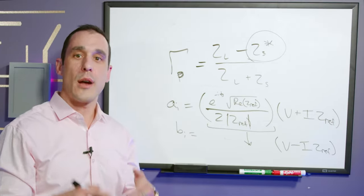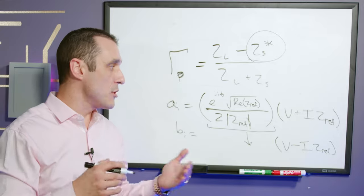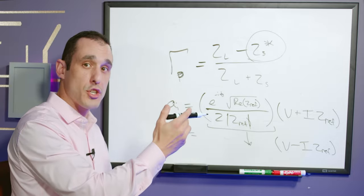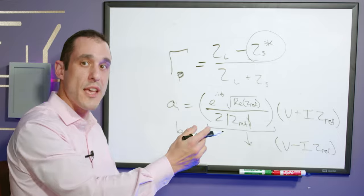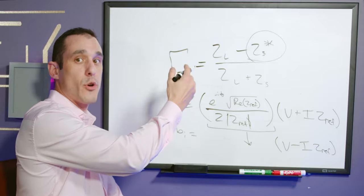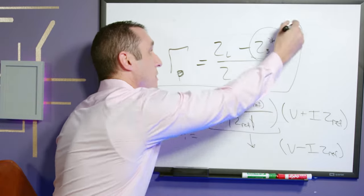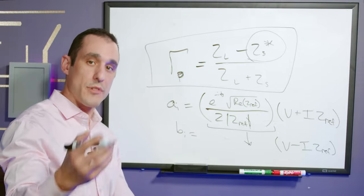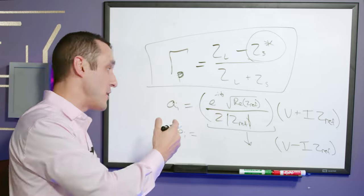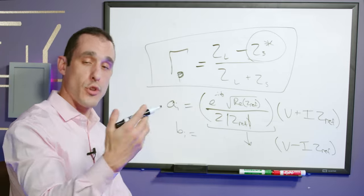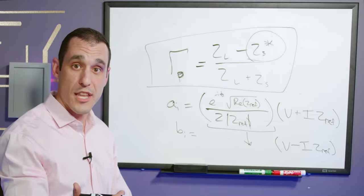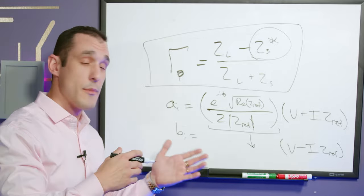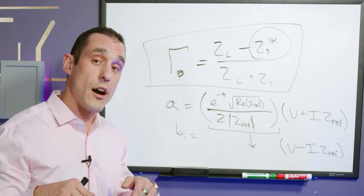The other reason this is important is because of what happens in simulation programs. Some simulation programs might actually use this definition for A and B, and as such, if you were to calculate a reflection coefficient using your voltage and current measurements, it wouldn't match the reflection coefficient that the program might spit out because the program might be spitting out this reflection coefficient versus the voltage wave reflection coefficient. I've read online that ADS, back when it was owned by Agilent, actually used this definition to do transmission line simulations and S-parameter calculations. If anybody out there is an ADS user and can comment on this, we'd love to hear from you.